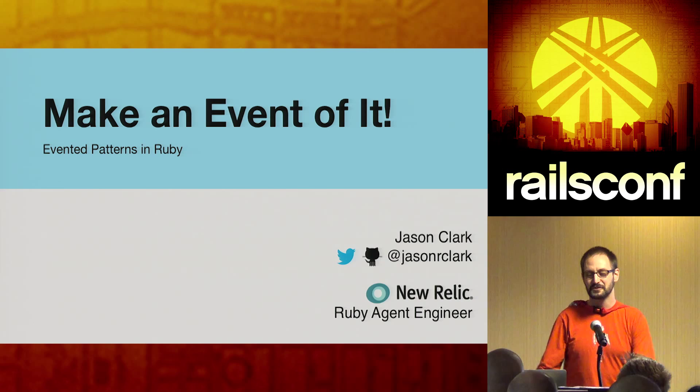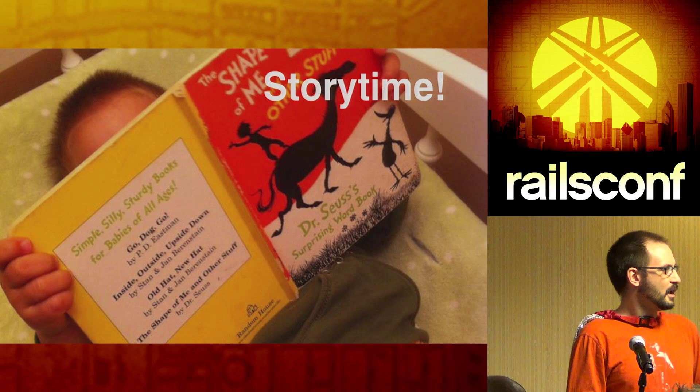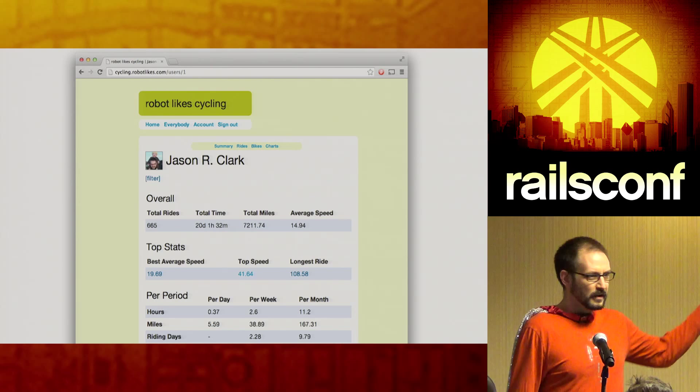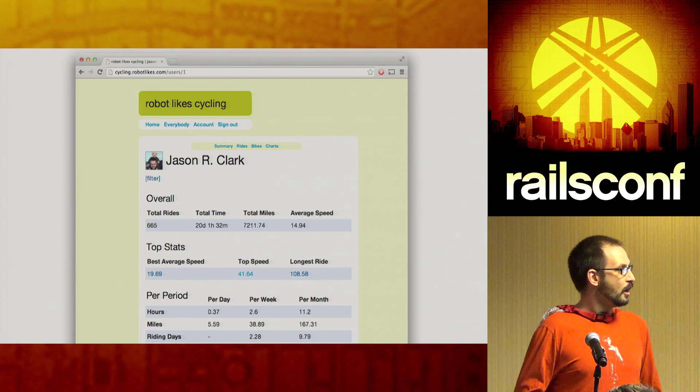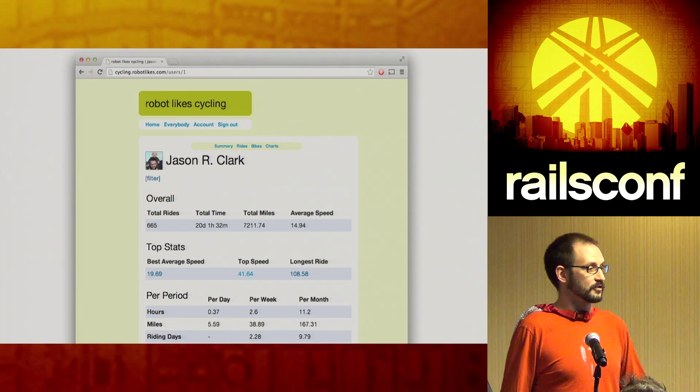What we're here to talk about today is something I call evented patterns in Ruby. Let's start off with a little bit of a story — slightly fabricated, but it might be something some of you have experienced. Imagine you've created an application — maybe something basic for tracking your cycling statistics — and all of a sudden your application really takes off. It gets on social media, people find out about it, and you start getting an influx of users.